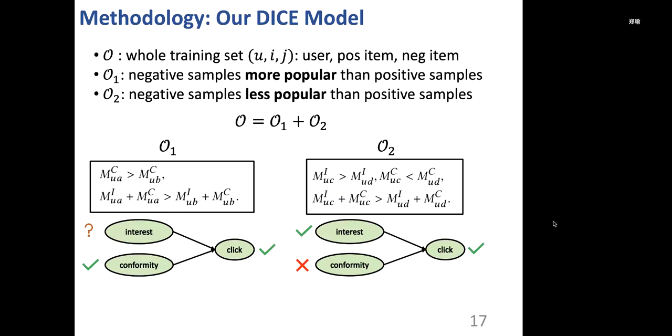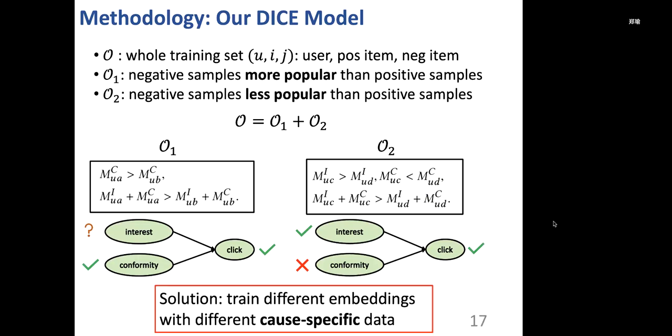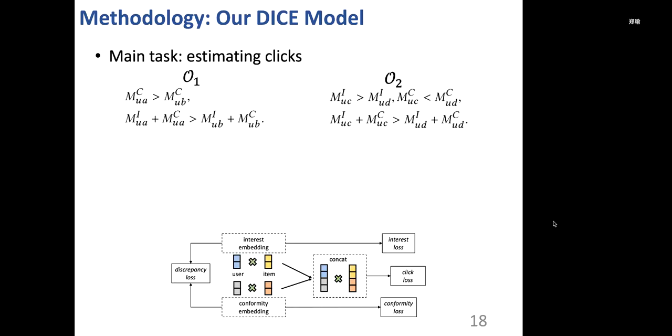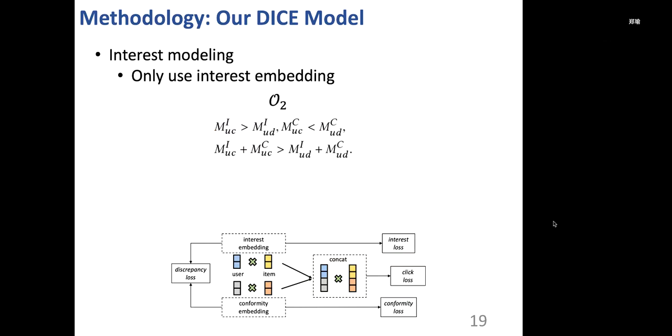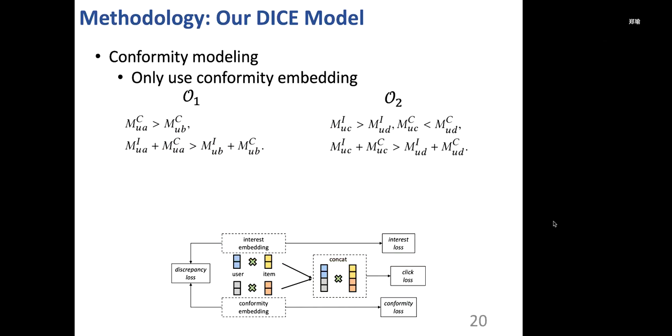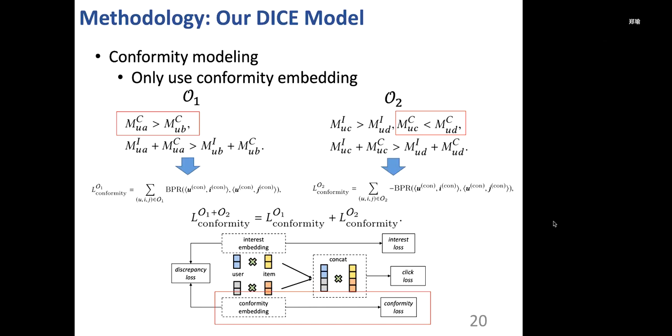Based on this analysis, we can divide the whole training set into two subsets, where O1 contains the data that negative examples are more popular than positive examples, and O2 contains the opposite cases. With O1 and O2, we propose to train different embeddings with different cause-specific data. The main task is to estimate clicks, and we can use data from both O1 and O2. Specifically, we concatenate the interest embedding and the conformity embedding, and use BPR to optimize those embeddings. For interest modeling, we only use interest embeddings, and data in O2 could be utilized. BPR loss is adopted to optimize interest embeddings. For conformity modeling, we only use conformity embeddings. Data from both O1 and O2 can be utilized, and BPR is also adopted to optimize conformity embeddings.